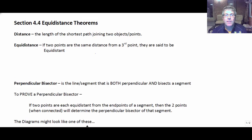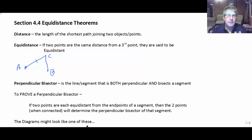If two points are the same distance or equal distance from a third point, they are said to be equidistant. So if we have points A and B, and a third point C, and the distance from A to C is the same as the distance from B to C, then A and B are said to be equidistant from C.